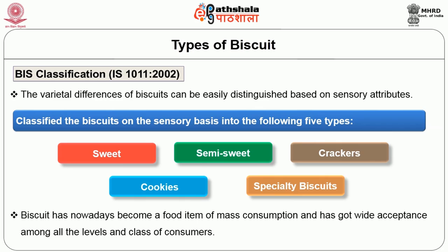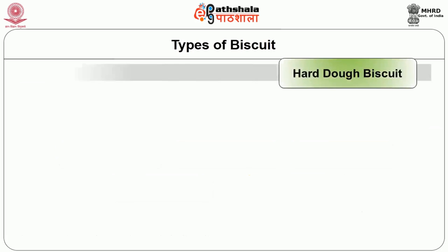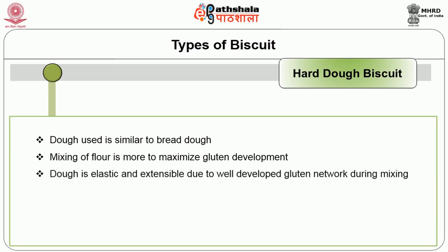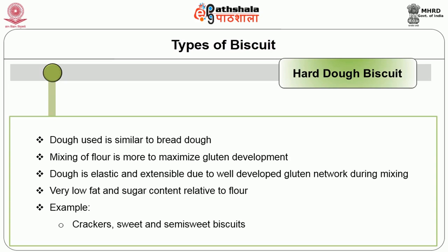The UK classification classifies biscuits into hard dough biscuit and short dough biscuit. In the hard dough biscuit, the dough used is similar to bread dough; mixing of flour is more to maximize gluten development. Hence the dough is elastic and extensible due to the well-developed gluten network during mixing. These have very low fat and sugar content relative to the flour. Crackers, sweet, and semi-sweet biscuits are examples of hard dough biscuits.